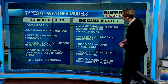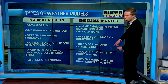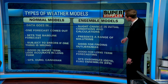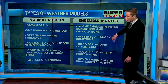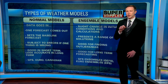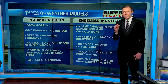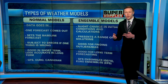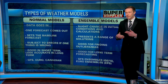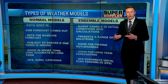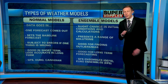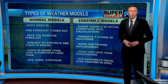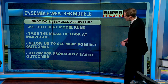The thing that we use sometimes, especially in long-term forecasting, are ensemble models. With these ensembles, what we do is we tweak the initial parameters just a little bit. So instead of the temperature being 31 at the start, maybe it's 32, or maybe the rain comes in just a little bit earlier. By tweaking these initial parameters, we're able to see what the different outcomes may be.